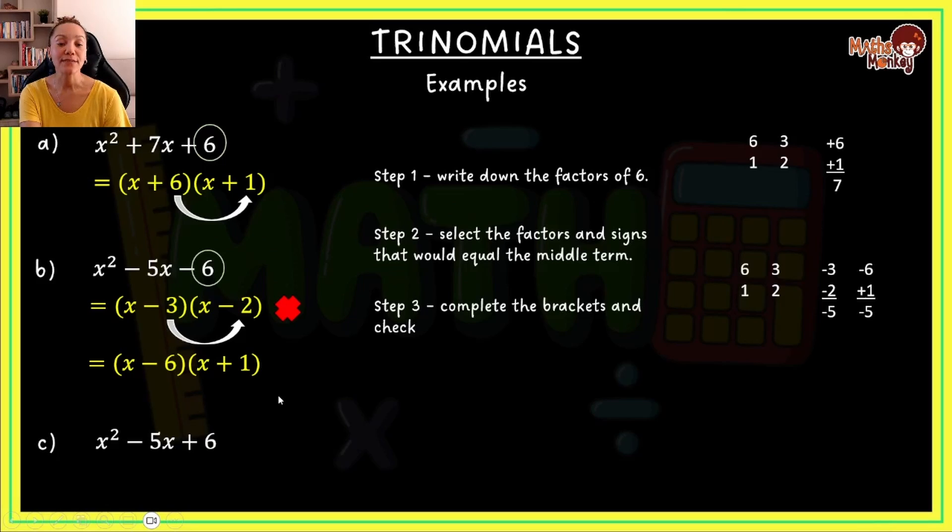We then go and we choose the second pair, which is minus 6 plus 1. We've got negative 6 times positive 1, and that will then essentially give us our factors of x minus 6 and x plus 1. And if we check it, negative 6 times positive 1 does give us negative 6. So this is the correct answer and not the top one.